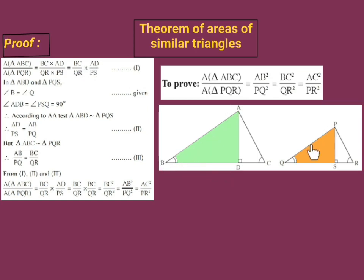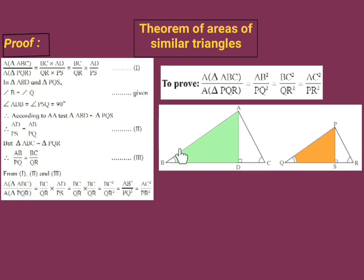Now look at triangle ABD and triangle PQS. In triangle ABD and triangle PQS, angle B is congruent to angle Q. The reason is: since triangle ABC is similar to triangle PQR, the corresponding angles are congruent — that is, angle ABC is congruent to angle PQR. But angle ABC is angle ABD and angle PQR is angle PQS. Therefore, angle ABD is congruent to angle PQS.